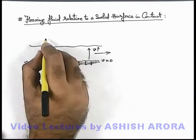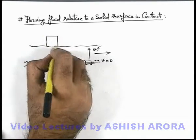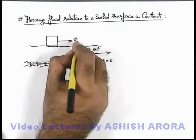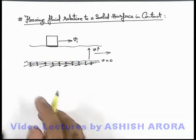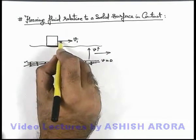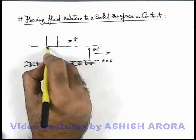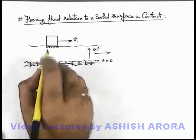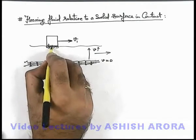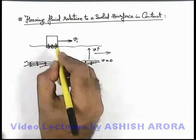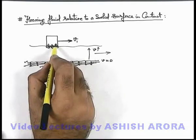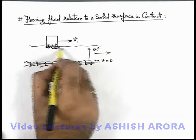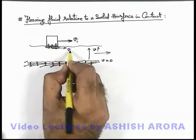Similarly, say if we have a solid block moving on the surface with velocity v-1. We can say if the solid block is moving with velocity v-1, then the liquid particles which are in contact with the solid block will also experience some adhesive force. If these adhesive forces exist, then due to them, the fluid layer in contact with the block will be dragged along with the body with the speed v-1.